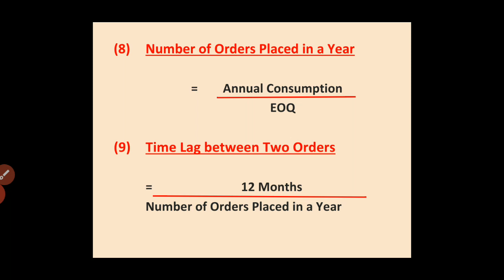Formula number eight and nine are rarely used. Formula number eight: Number of orders placed in a year. This can be used in case of EOQ. Number of orders placed in a year equals to annual consumption divided by EOQ.